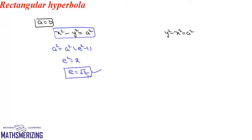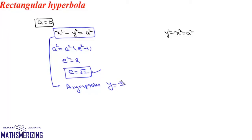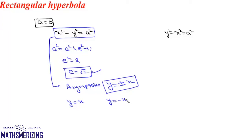The eccentricity of a rectangular hyperbola is always √2, regardless of the form. For its asymptotes: since a = b, the asymptotes y = ±(b/a)x become simply y = ±x. One line is y = x and the other is y = -x. These two asymptotes are perpendicular to each other, which is why this hyperbola is called a rectangular hyperbola.